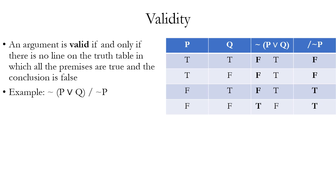Is this argument valid? We ask: are there any rows where the premise is true and the conclusion is false? Row one has a false premise and false conclusion. The only row where the premise is true is row four, and there the conclusion is also true. So there's no row with a true premise and false conclusion — therefore it is a valid argument.